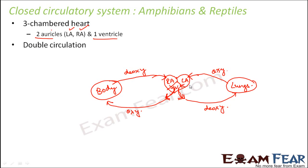Blood flows from the auricles to the ventricle due to the high pressure of the blood. However, since the ventricle is not divided into separate chambers, both oxygenated blood from the left auricle and deoxygenated blood from the right auricle enter the same ventricle, so mixing cannot be prevented at the ventricle level.